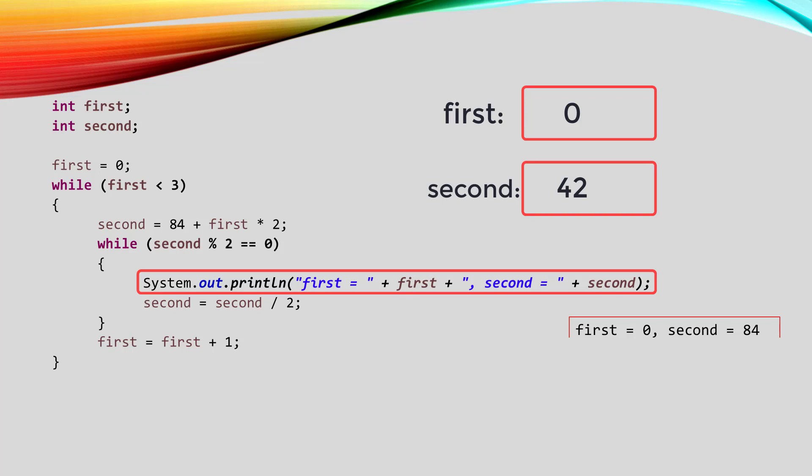This time, the print statement is going to get different values for first and second, and the output will look like this. Then we'll take second and do integer division, dividing it by two. That will give us 21. We'll store that back in second, and we're at the end of the inner loop again.